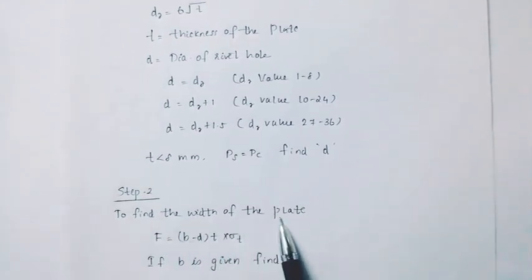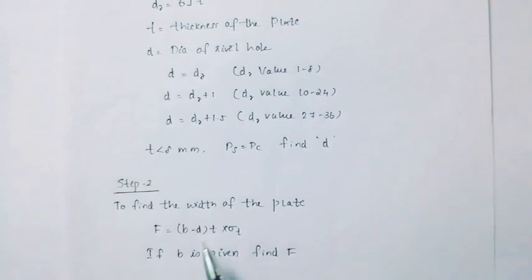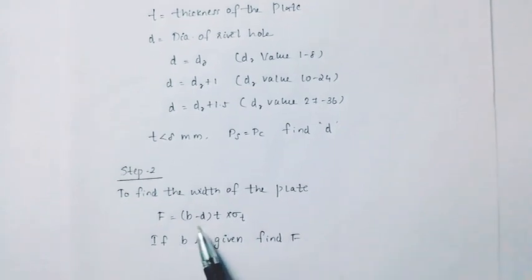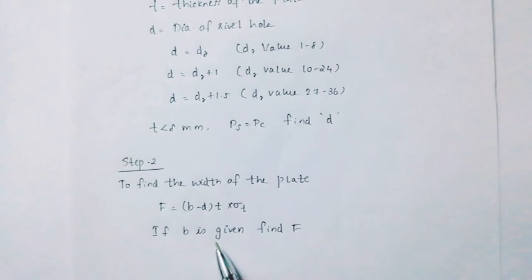Step 2: To find the width of the plate. F is equal to B minus D into T into sigma T. Now B is given. Find F.